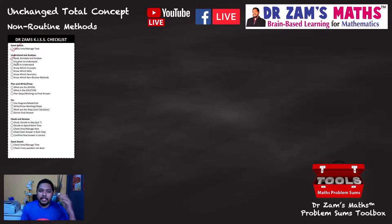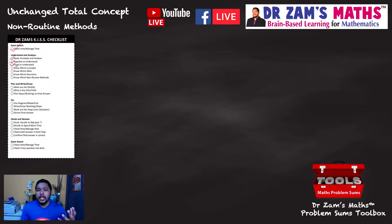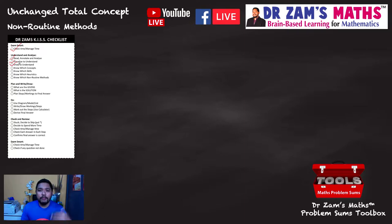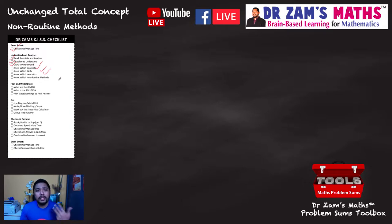The Dr. Zam KISS checklist includes exam smart consideration to create a math brain in an exam context: take note of time remaining, read, annotate, analyze — scribble down, form links, look at parts and how they relate. Visualize to understand — form pictures in your head or draw to understand. I advise you to draw to understand. Then know which concepts and skills to apply, and figure out which non-routine method to use — in this example, the unchanged total concept.